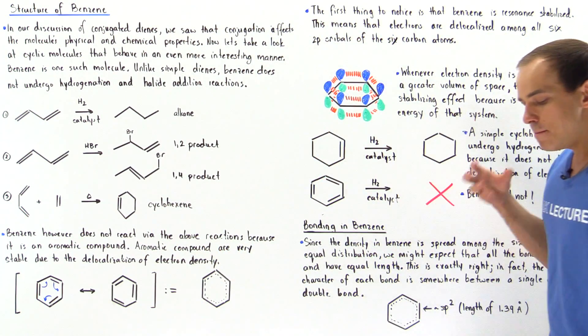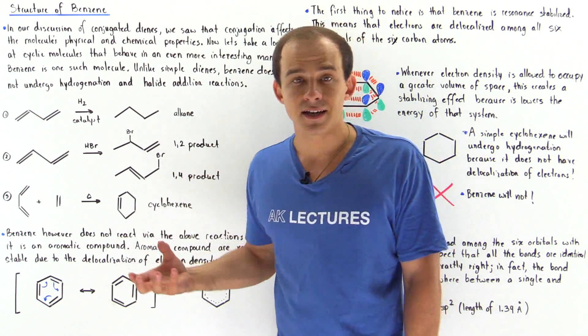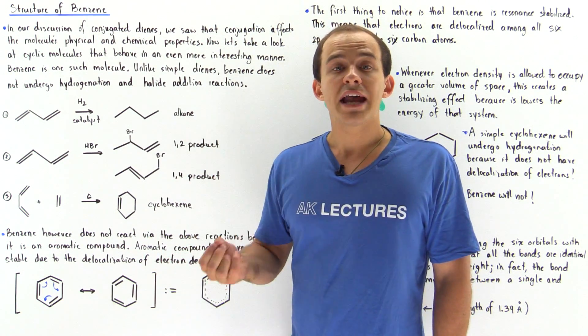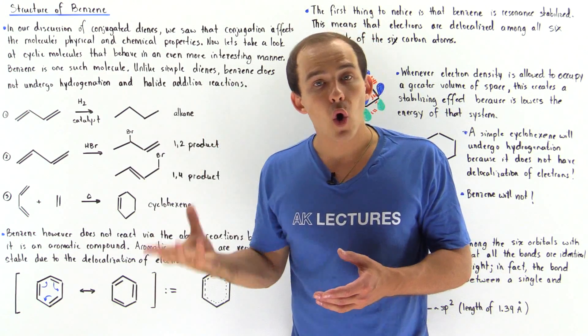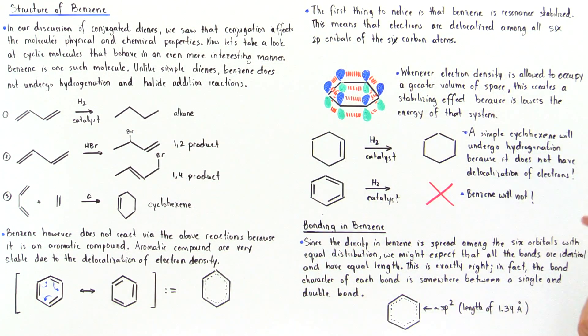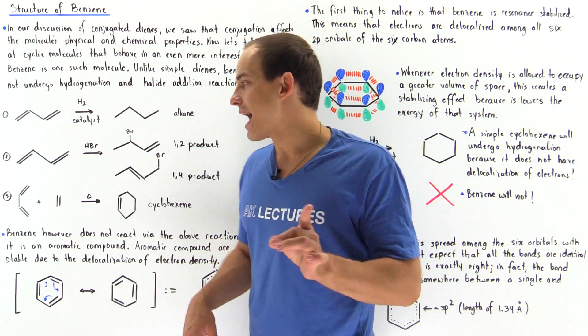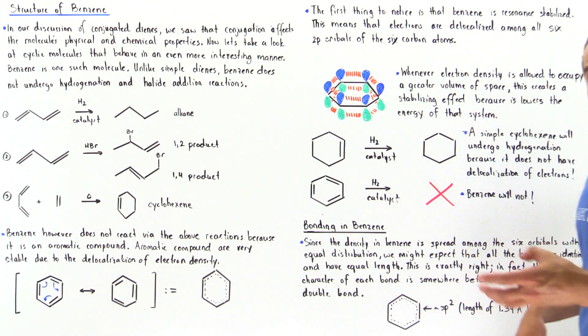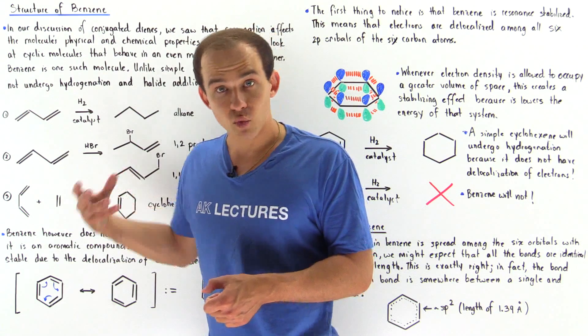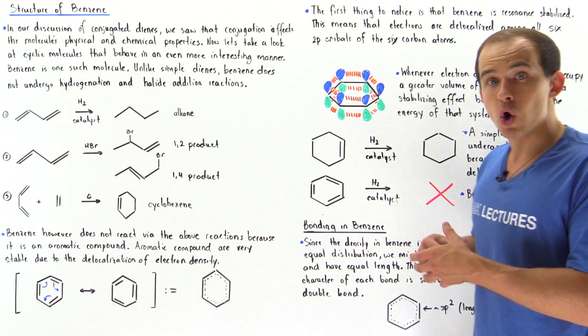So once again, benzene is a very, very unreactive molecule because it's considered an aromatic compound. That is a compound that contains conjugation among all the atoms inside that particular molecule. Now, we're going to look in much greater detail as to what an aromatic compound actually is. In this lecture, we'll simply mention that benzene is, in fact, an aromatic compound.